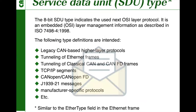CAN-XL also provides new functionalities. One of them is service data unit type information, which is similar to the EtherType field in the Ethernet frame. If you are familiar with Ethernet, this is a kind of layer management information. It provides information about which next higher layer protocol is being used — it could be CiA CAN-based higher layer protocols, tunneling of Ethernet frames, TCP/IP segments, or something else. The SDU type is a feature usable for higher layer protocols.